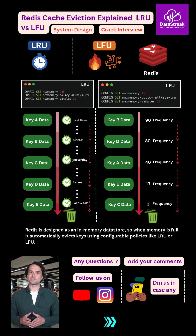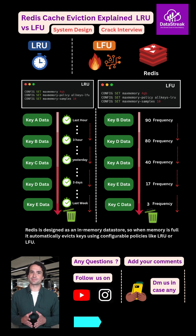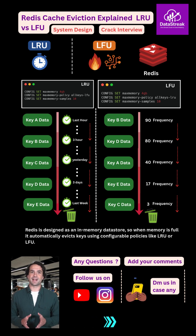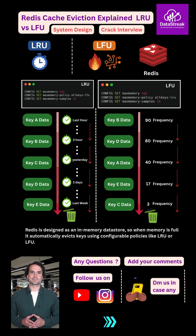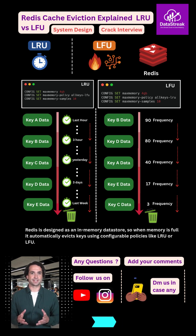In simple terms, LRU cares about time. LFU cares about popularity. Redis uses optimized, approximate versions of both to keep performance extremely fast at scale. So in system design interviews or real systems: LRU for short-lived data, LFU for hot and high-value data. And that's how Redis smartly manages memory under pressure.